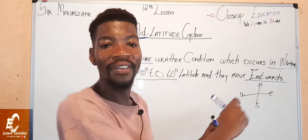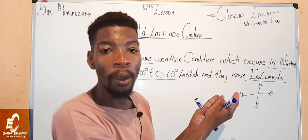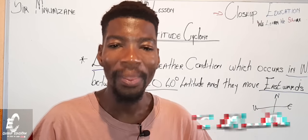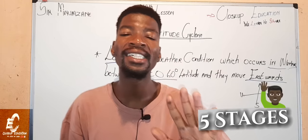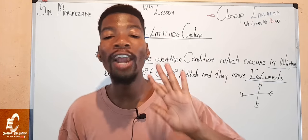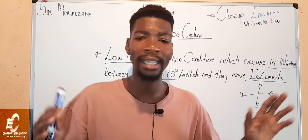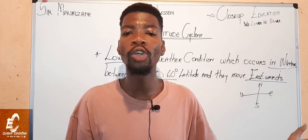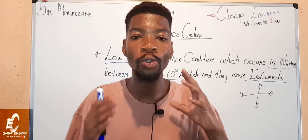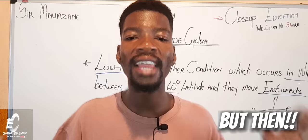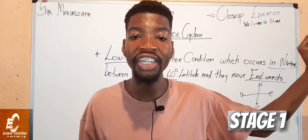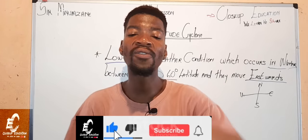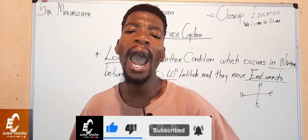Now that we understand the definition and almost everything about the mid-latitude cyclone, we have to understand the formation — how does it form? It has five stages, and it is very important to understand all five. I heard one YouTuber say the mature stage is the most important one, but we have to understand from stage one, the initial stage, until the last stage, the dissipating stage. So stay tuned, like this video, comment, and subscribe.